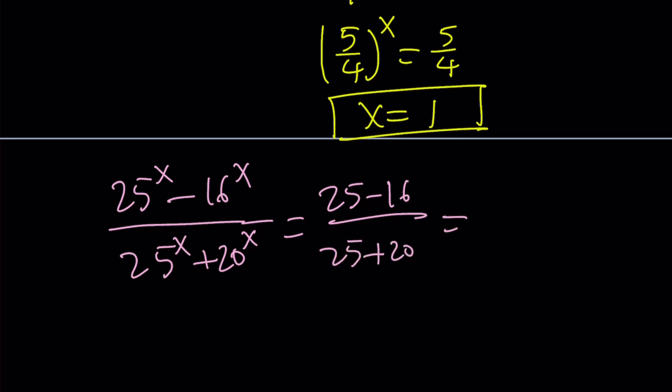Which can be written as 9 over 45. And 9 goes into 45 five times. Therefore, this can be written as 1 fifth, which means our solution checks. And this brings us to the end of this video.